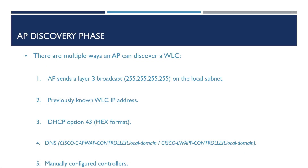The first thing the access point will do when it's powered on is to try and discover as many wireless controllers as possible. The AP can do this without any configuration and can be plugged in straight out of the box discovering controllers. Firstly, the AP uses a layer 3 broadcast on the local subnet, using a CAPWAP discovery message on UDP port 5246. If there are any wireless controllers on the subnet, they will reply with a unicast discovery response to the access point.